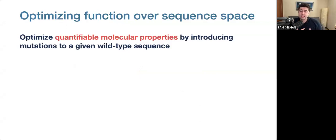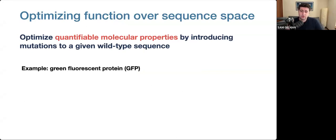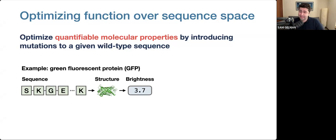In our work with protein design, we're interested in optimizing quantifiable molecular properties by introducing mutations to a given wild-type sequence. Let's take green fluorescent protein, or GFP, as an example — originally found in jellyfish. GFP's main function is emitting green light in a process known as fluorescence. GFP and engineered versions of it are commonly used as marker proteins in scientific research. Like all proteins, GFP has an amino acid sequence that folds into a distinct 3D structure, and the structure determines its function. In this case, we're looking at brightness. The wild-type version has a brightness of 3.7.